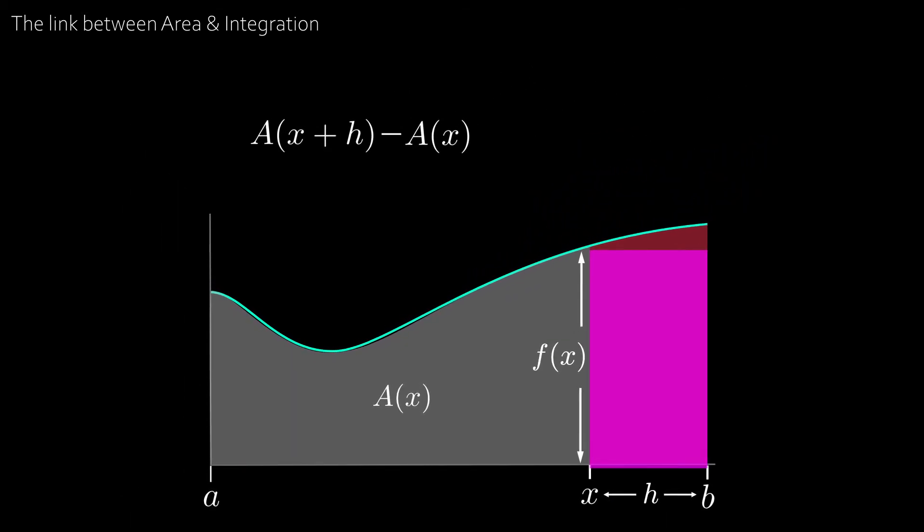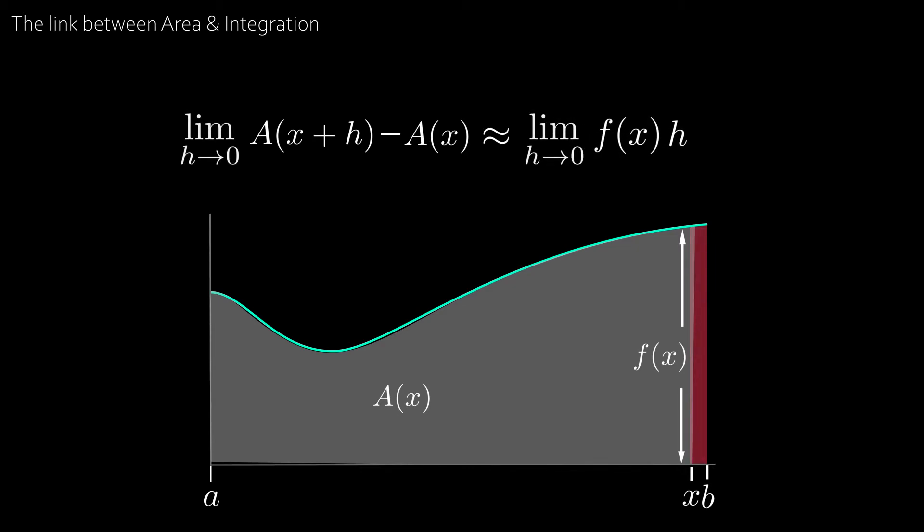So that means the red area is approximately the area of this pink rectangle. Now as h gets smaller or as x gets closer to b the pink area is practically equal to the red area. So we can take the limit as h approaches zero and convert this into an equal sign.